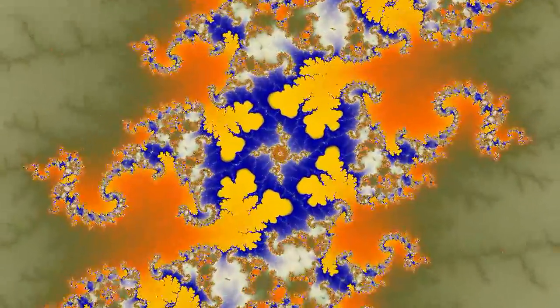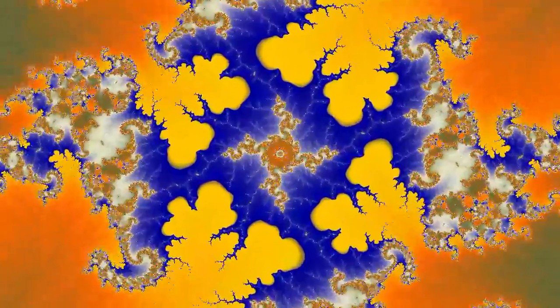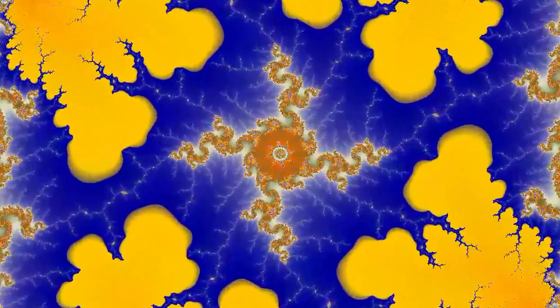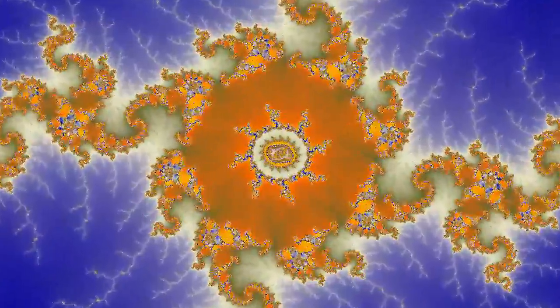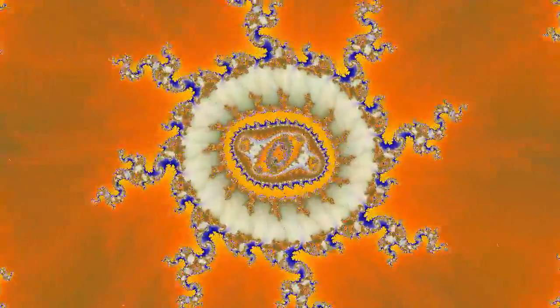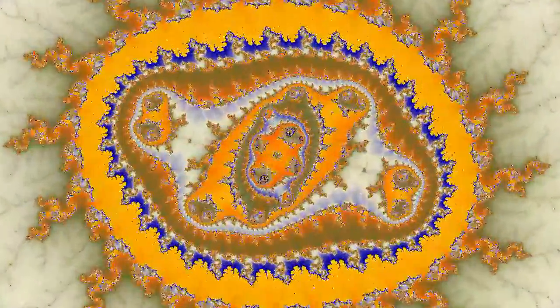Just take a point called Z in the complex plane. Let Z1 be Z squared plus C, and Z2 is Z1 squared plus C, and Z3 is Z2 squared plus C, and so on. If the series of Z's will always stay close to Z instead of trend away, that point is in the Mandelbrot set.